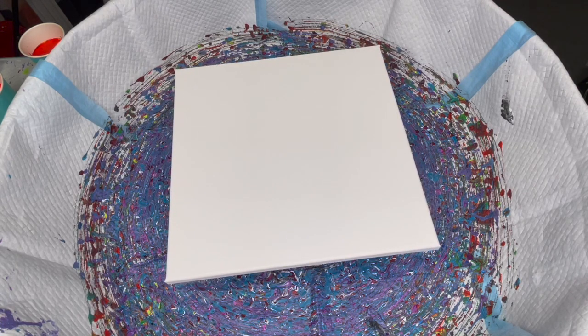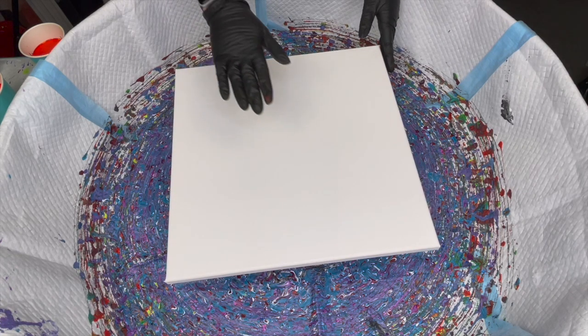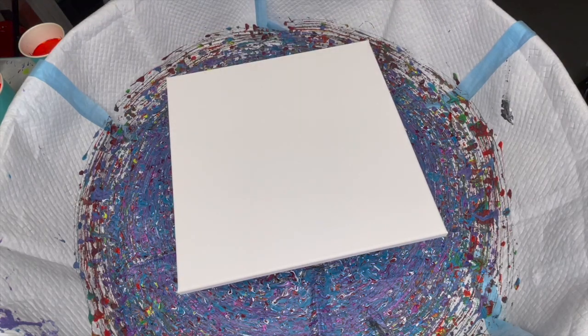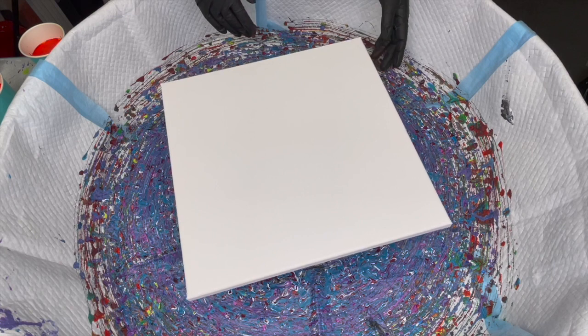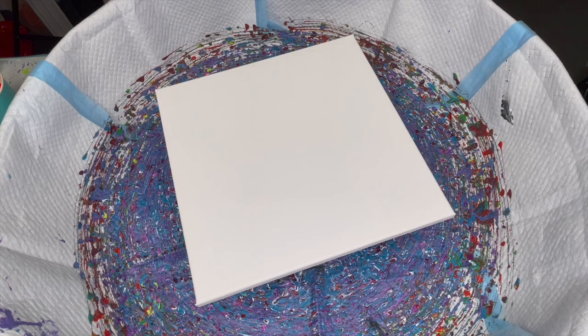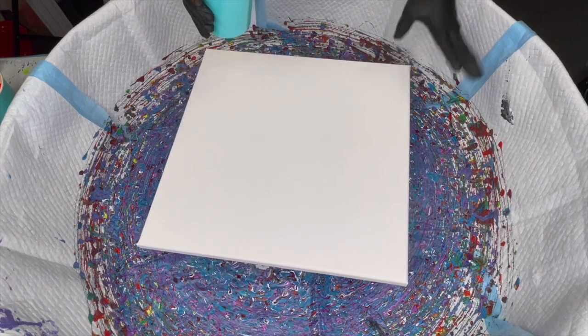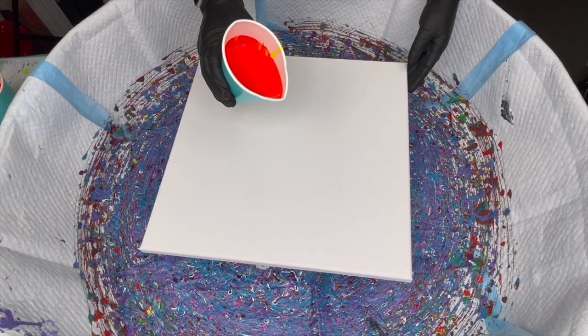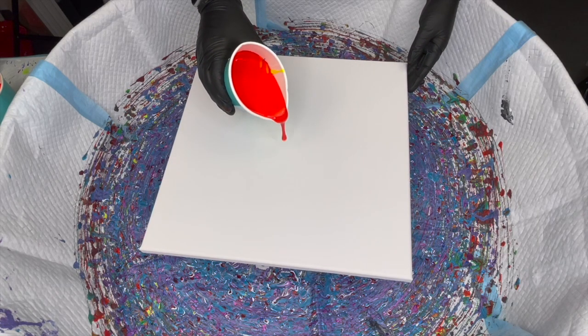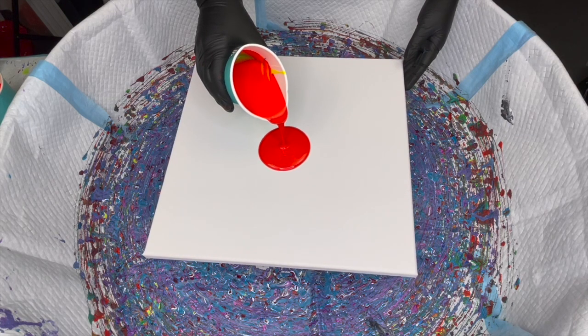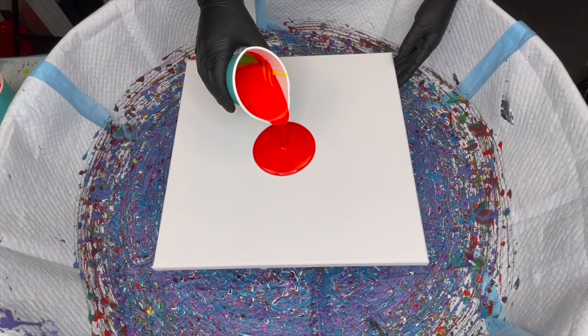So what we're going to do is I'm going to do a straight pour in the center, pour out the one cup, then switch it out for the second cup. And I'm going to slowly turn our canvas, so hopefully we'll get a nice design. I'm not going to turn too much, but just a little bit. So let's go. That red is very powerful.